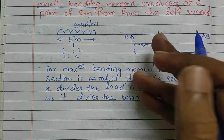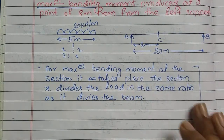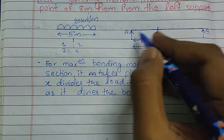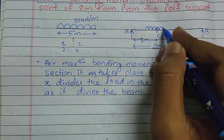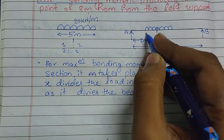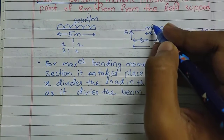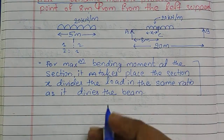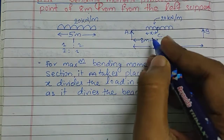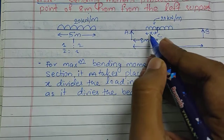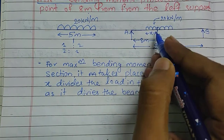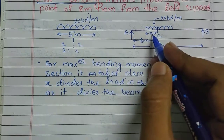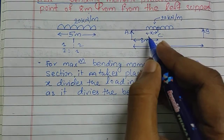This point will become clearer as I solve the numerical. Suppose I place the UDL here on this beam — this is our span X — with a 20 kN per meter load. I need to find the value of X so that I can find the ratio in which the 20 kN per meter UDL of 5-meter span is divided on this beam.